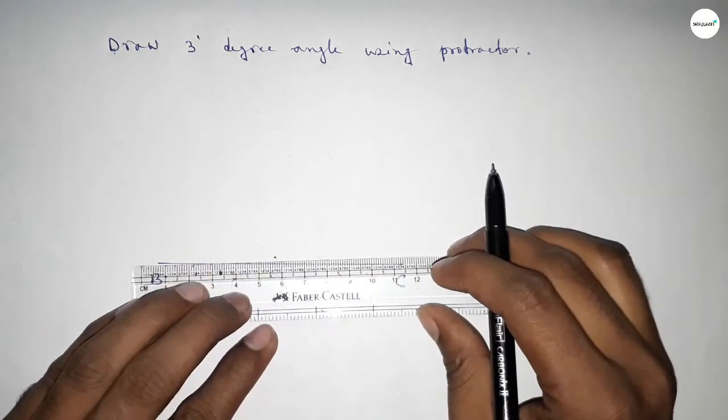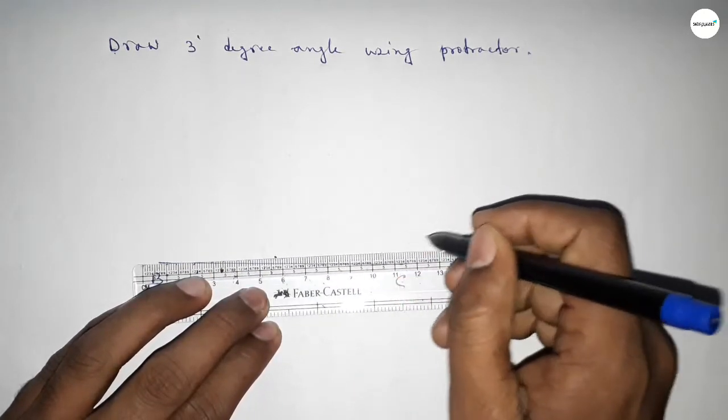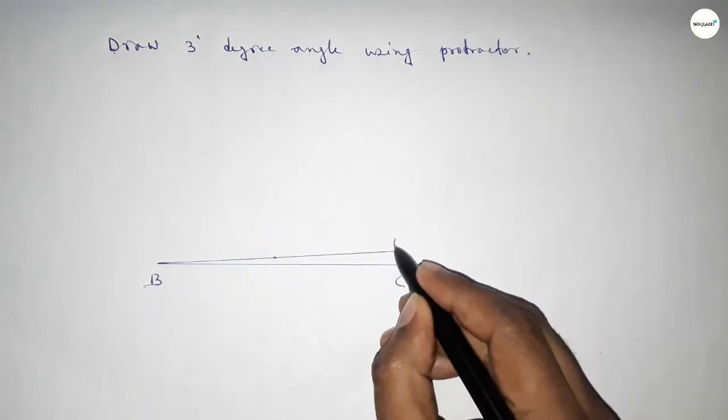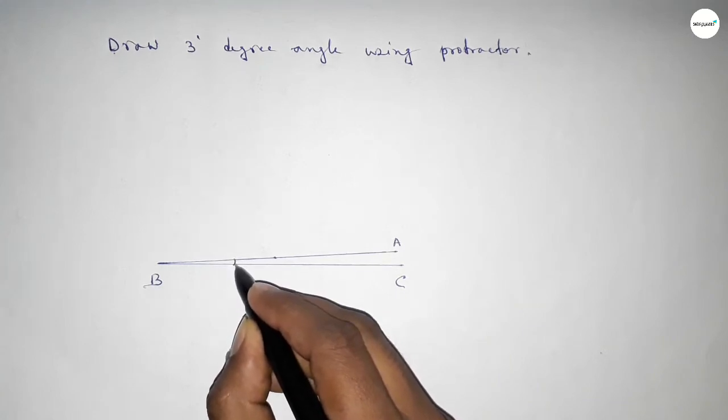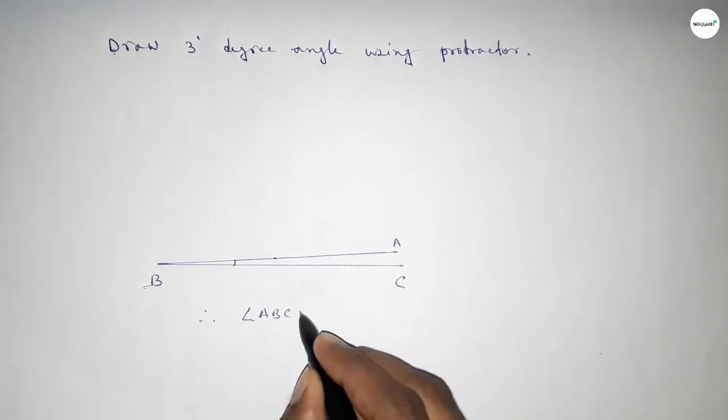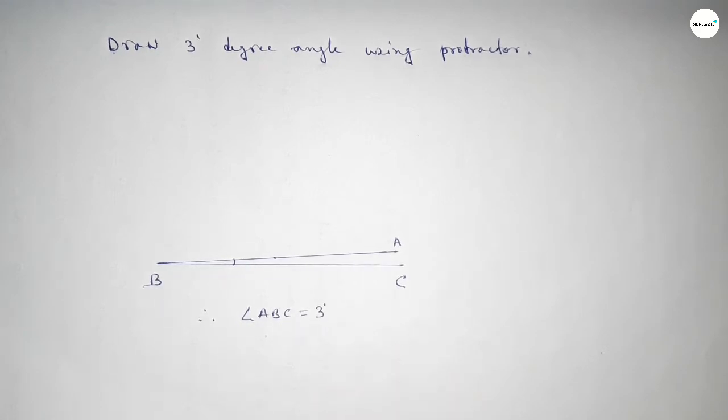Now joining this to get 3 degree angle. So joining this side and taking here point A. So angle ABC up to this, therefore angle ABC equal to 3 degrees.